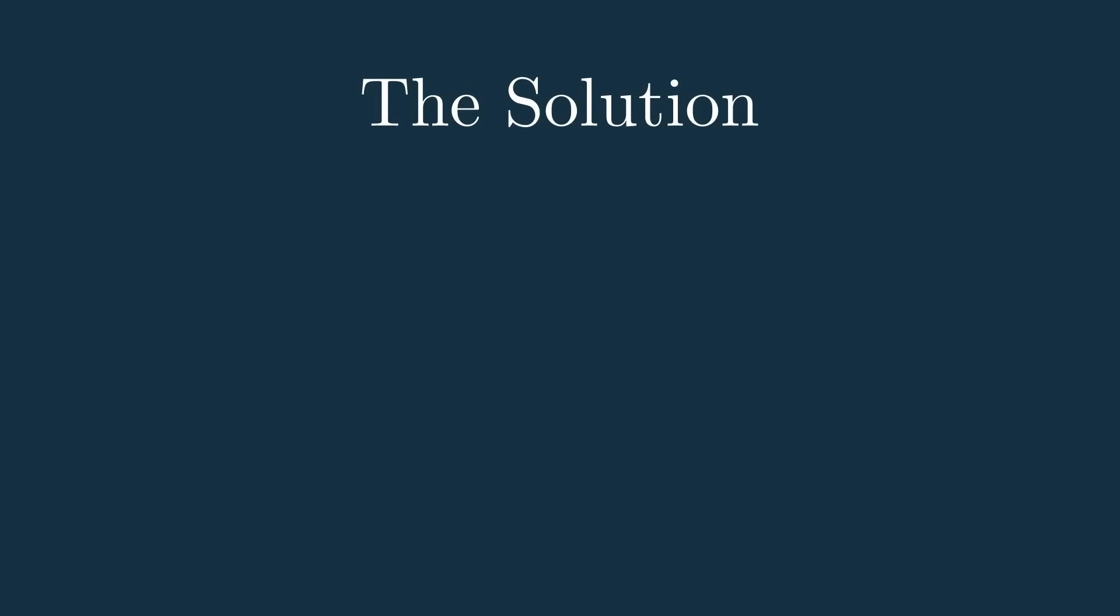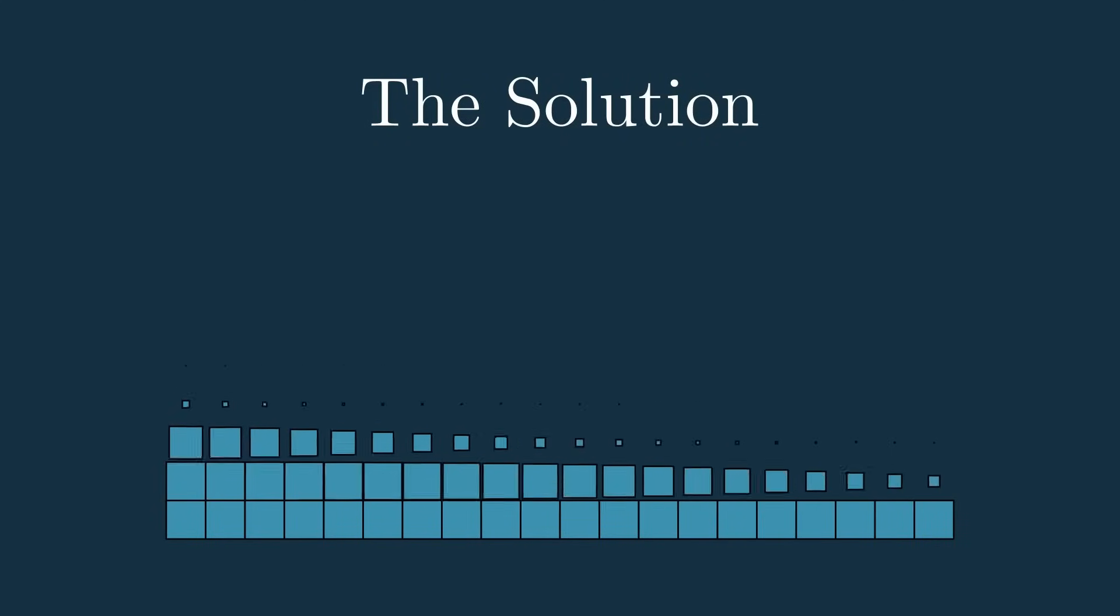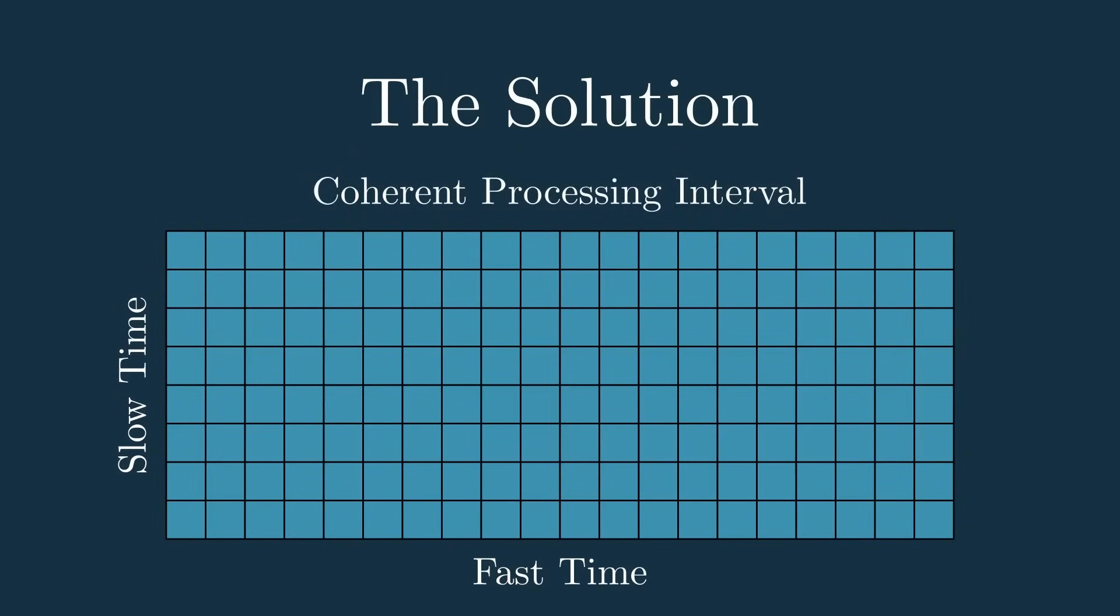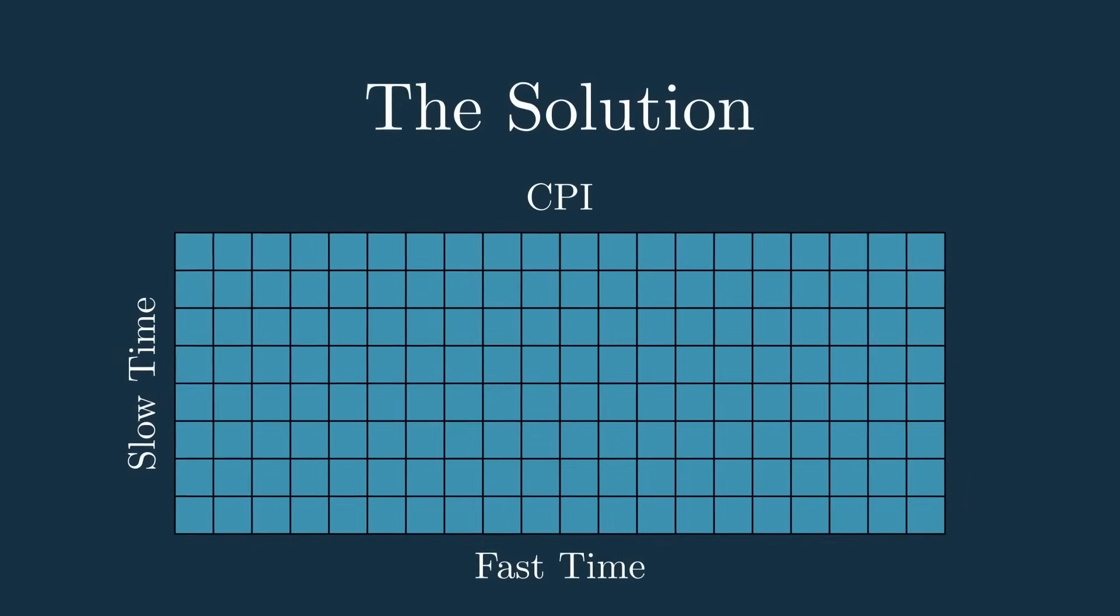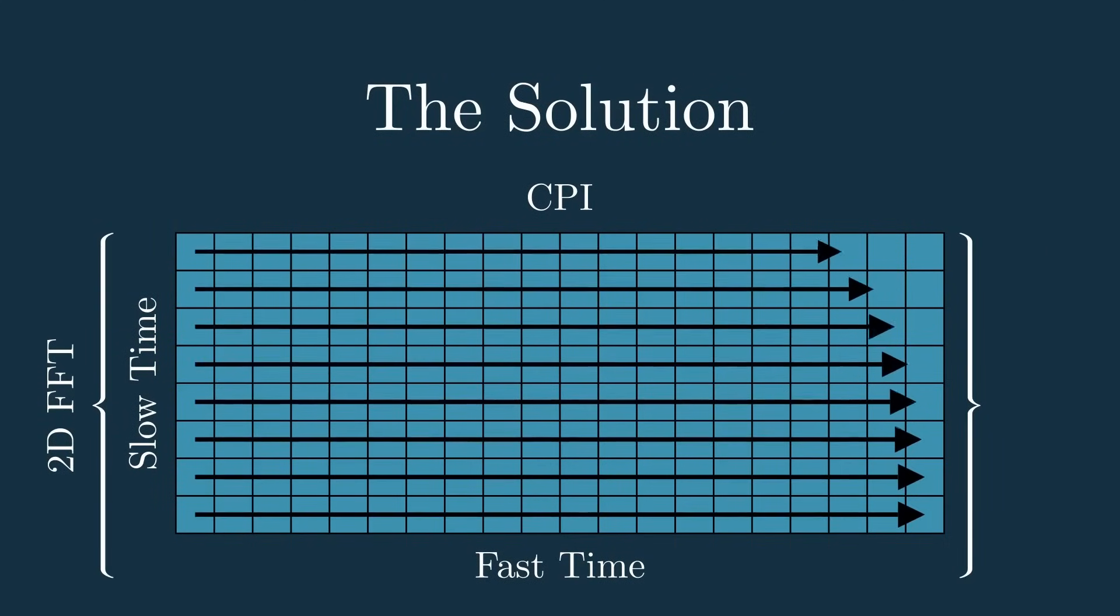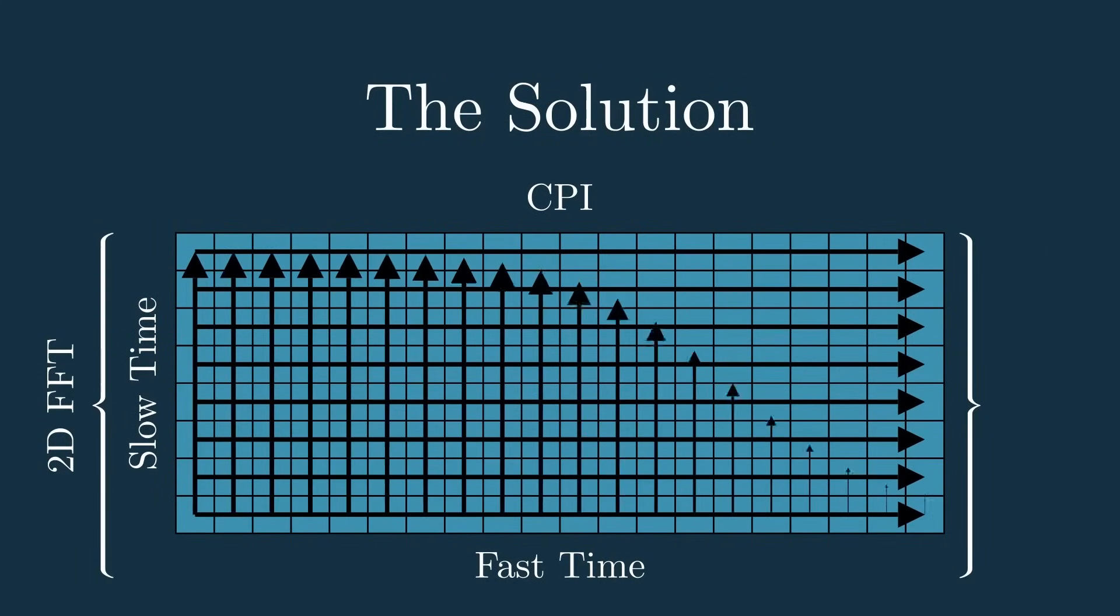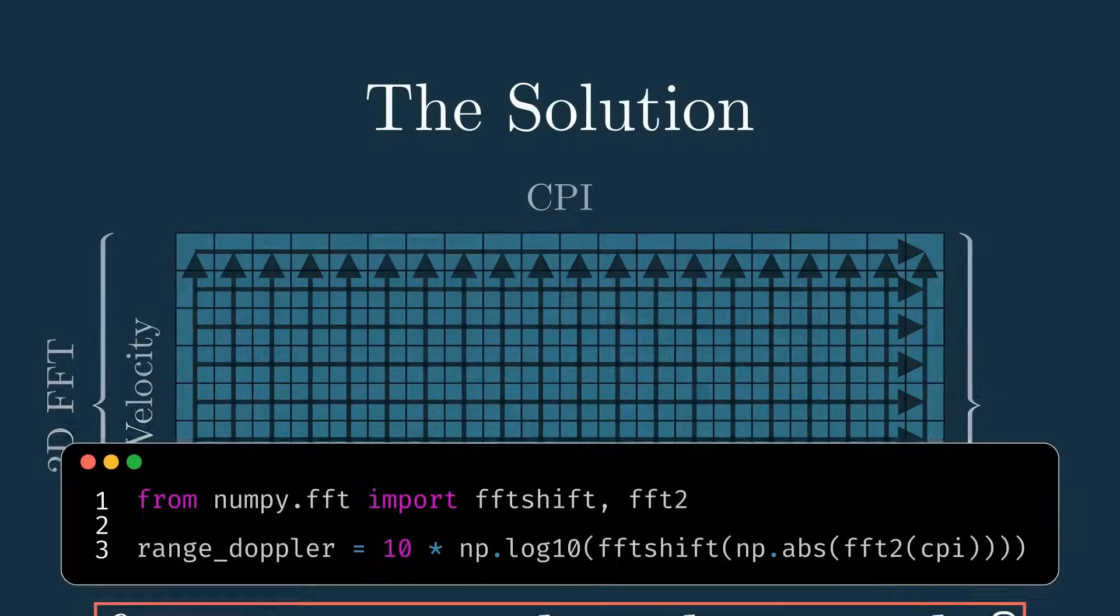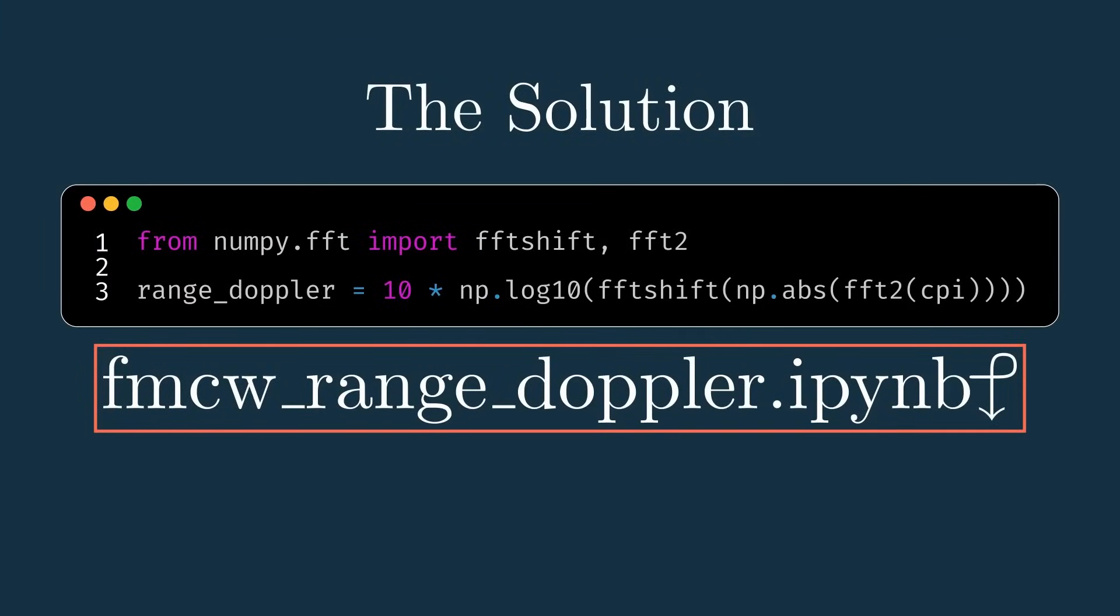Now here's the awesome solution that I mentioned earlier. We can literally just take a normal set of samples over a chirp time, then repeat that over a number of chirps to get what we call a coherent processing interval, and then take the two-dimensional Fourier transform which first computes the FFT over the rows and then over the columns. That'll then give us an output where the x-axis is range and the y-axis is velocity. And this just comes out to be a few lines of Python code to do all this complicated math.